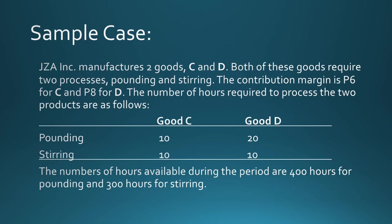To demonstrate, we will go to a sample case. Sample case: JZA Inc. manufactures two goods, C and D. Both these goods require two processes, pounding and stirring. The contribution margin is 6 pesos for C and 8 pesos for D. The number of hours required to process the two products are as follows: for good C, pounding is 10, for good D, pounding is 20. For good C, stirring is 10, for good D, stirring is 10. The numbers of hours available during the period are 400 hours for pounding and 300 hours for stirring. So what combination of C and D are we going to produce to maximize the profits?